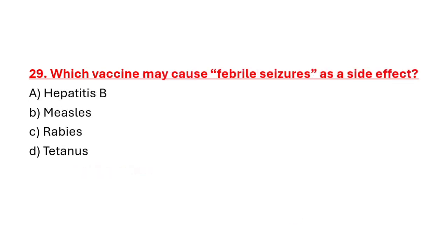Question 29: Which vaccine may cause febrile seizures as a side effect? Option A: Hepatitis B. Option B: Measles. Option C: Pregnancy. Option D: Tetanus. Correct answer is Option B: Measles.